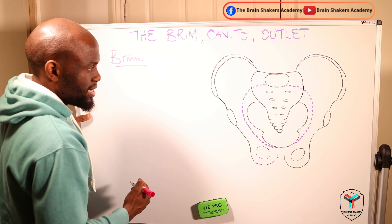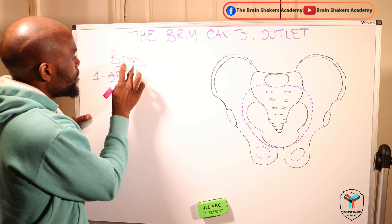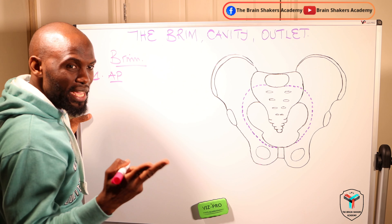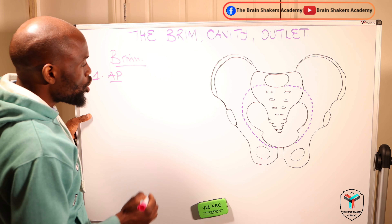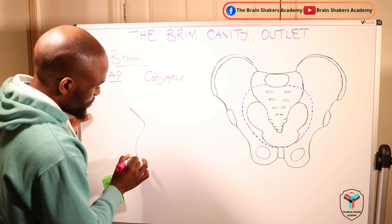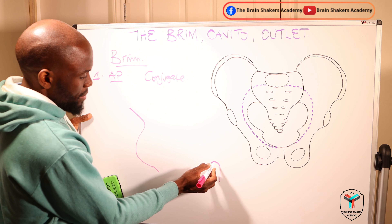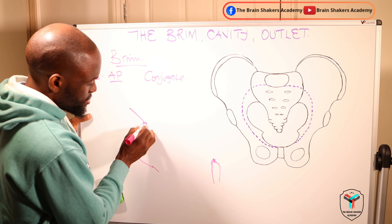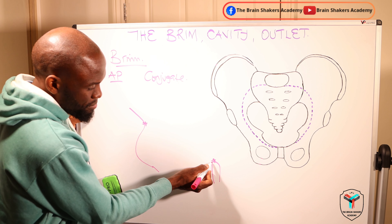The pelvic brim, as discussed in our video on pelvic landmarks, is an important structure of the pelvis as it helps us differentiate between the true pelvis and the false pelvis. Everything above those landmarks becomes part of the false pelvis and anything beneath it is part of the true pelvis. The pelvic brim has an anteroposterior diameter measuring from the upper border of the symphysis pubis to the sacral promontory, as well as oblique and transverse diameters.